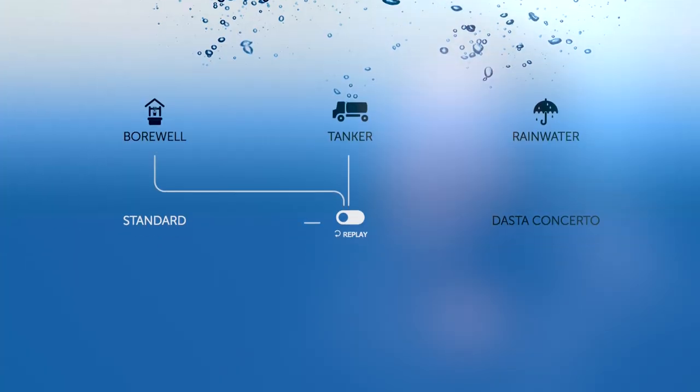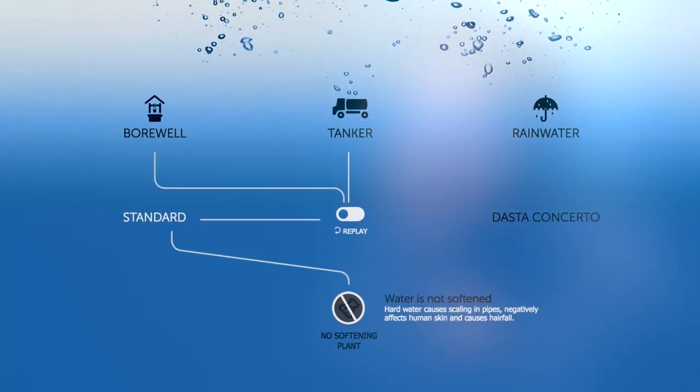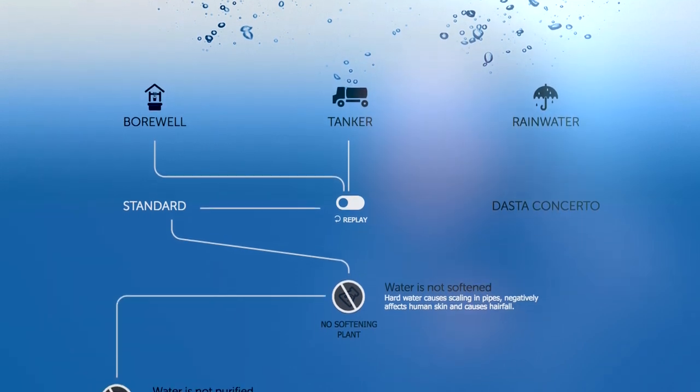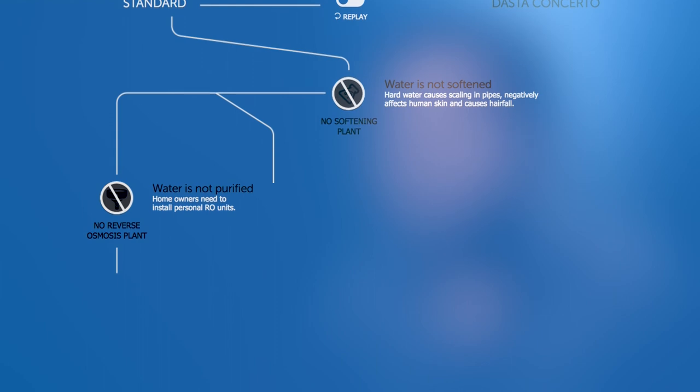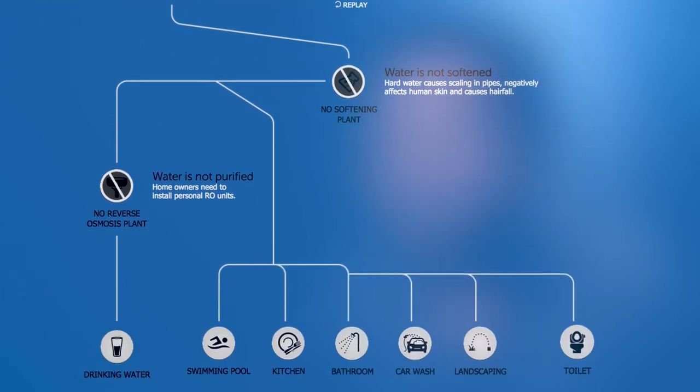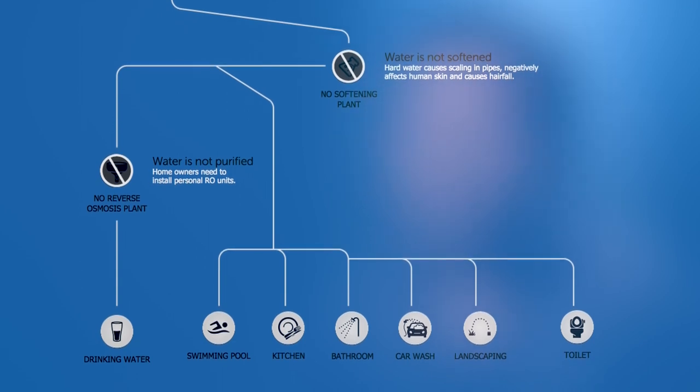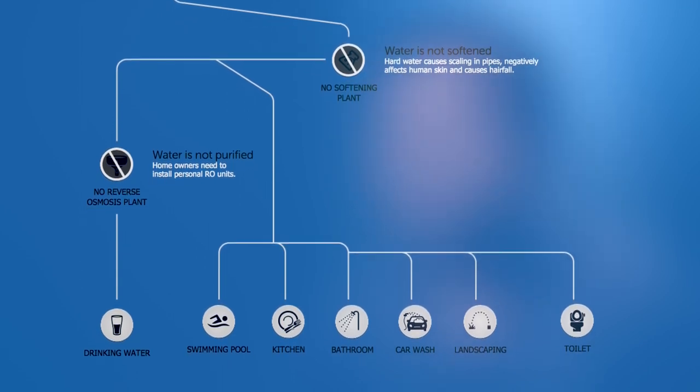In a standard water management system, there are two sources of water: borewell and tanker. This water is not drinkable. You need to install a personal RO system in each and every kitchen before you can drink it. Water from both these sources is pumped to overhead tanks and is then sent directly to your kitchen and bathroom.